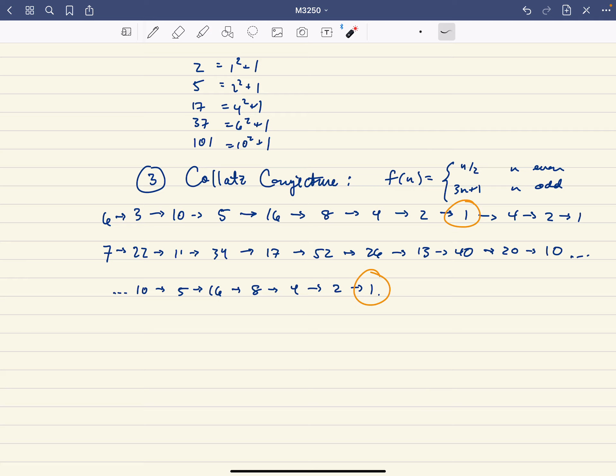So anyway, there's some good reasons why people believe that this is true. Another good reason why people believe that this is true is that this conjecture is checked for all values up to something like 10 to the 18.